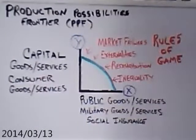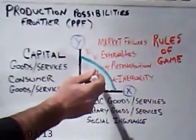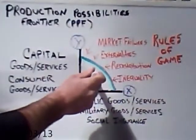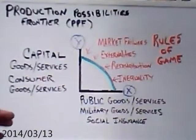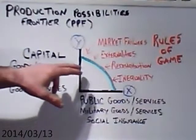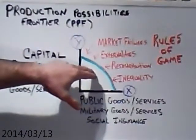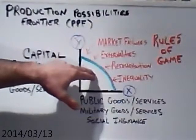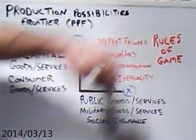Welcome, I'm Cory Newton. This video is the rules of the game and the size of the pie — the old equity-efficiency trade-off. The decision society has to make between redistributing the existing size of the pie to its members or growing and expanding the pie outward.